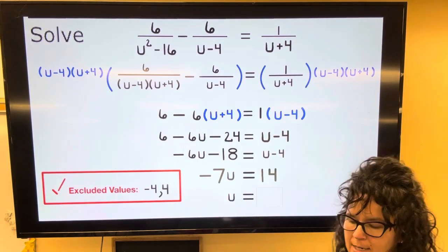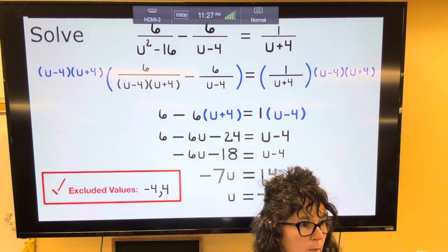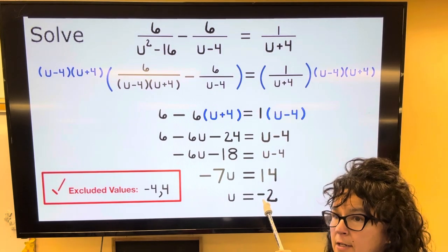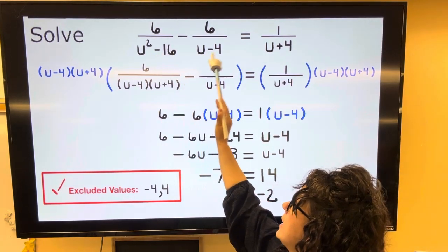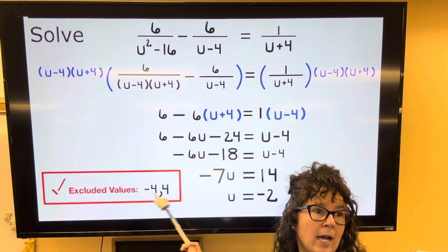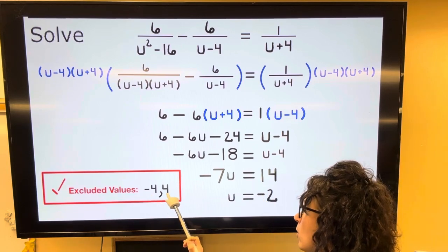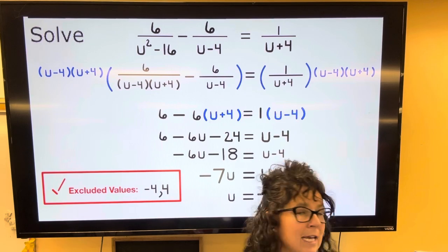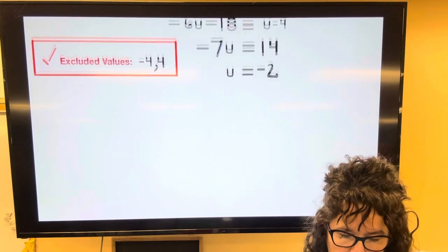Now I do want to check this, so checking it one more time. The number negative 2 is going to be fine because it's not going to lead me to dividing by 0. I already knew ahead of time that if this number would have been a negative 4 or a positive 4, then I would have had to thrown it out and say no solution. Okay, so let's go ahead and do one more.